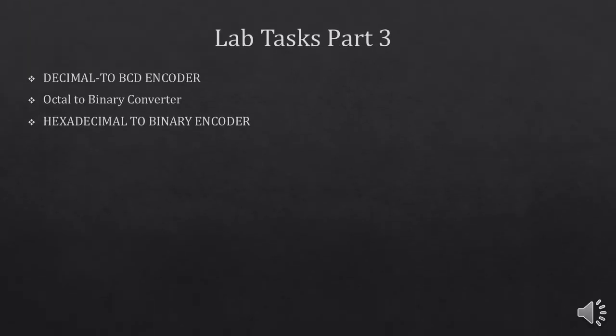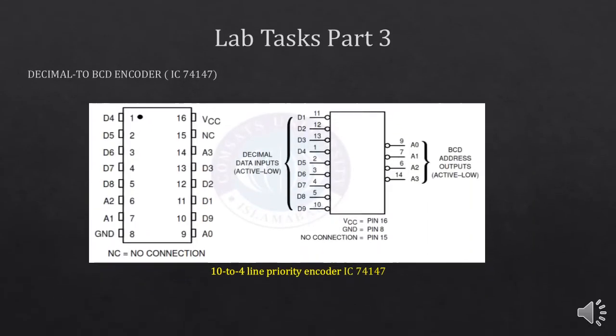In lab task part 3, you are going to implement 3 circuits: decimal to BCD encoder, octal to binary converter, and hexadecimal to binary encoder. You are going to implement the decimal to BCD encoder using IC 74147. It is a 10-to-4 line priority encoder IC. You have already studied the priority encoder in your theory — for a detailed overview, you can consult those lectures.